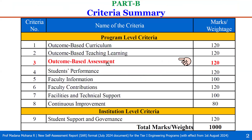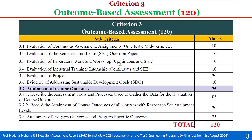Criterion 3, outcome-based assessment, carries 120 weightage. Let us see what are its sub-matrices and their details as per the SAR document. Criterion 3 is divided into 8 sub-criteria. The first sub-criterion, 3.1, is evaluation of continuous assessment with respect to assignments, unit tests, mid-term exams, etc., and carries 10 weightage.